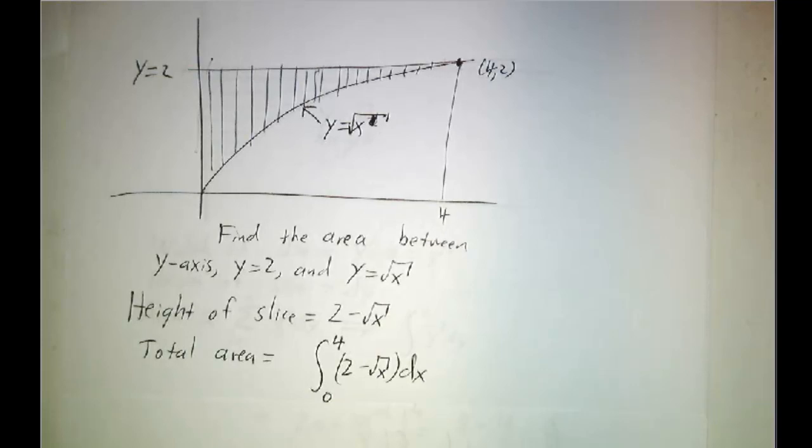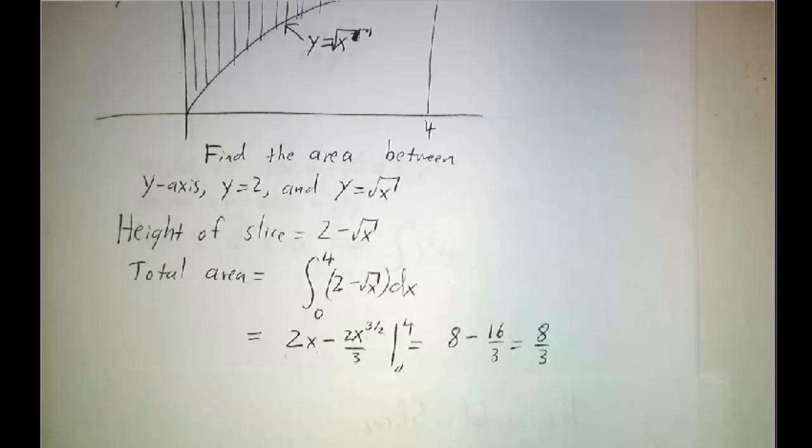Now that's a little bit annoying because we don't like having fractional powers of x, but we can handle it. It turns out that the antiderivative of 2 is 2x. The antiderivative of x to the 1 half is 2 thirds x to the 3 halves. You plug in 4 and 0, and you get an answer which is 8 thirds.